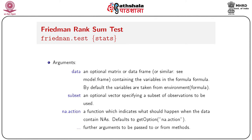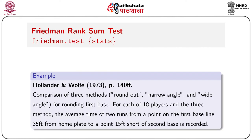The data argument is an optional matrix or data frame containing the variables in the formula. By default, variables are taken from the environment of the formula. The subset argument is an optional vector specifying the subset of observations to be used. The na.action argument handles missing values — if the data contains missing values, na.action will exclude them before applying the Friedman test.